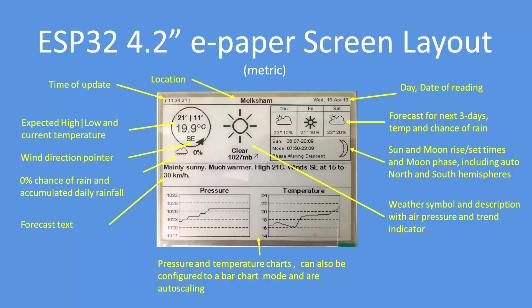There's some forecast text and pressure charts. These can be configured as bar charts or line charts, with auto scaling on and off. You can also set them with a fixed maximum and minimum pressure — perhaps 1050 millibars and 950 millibars. If you switch the units, it all switches to imperial: inches and miles per hour.